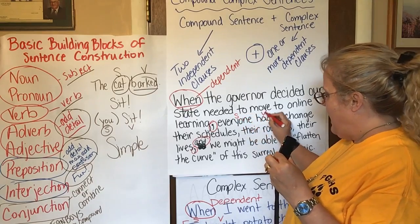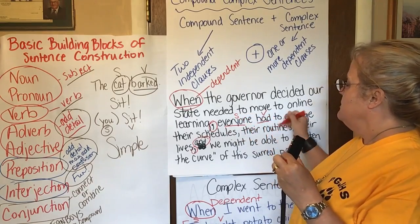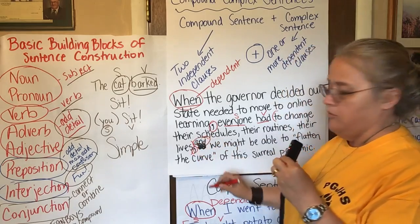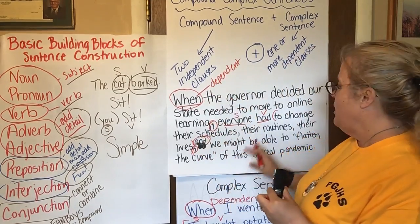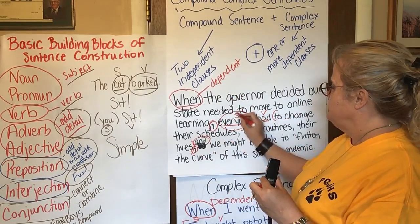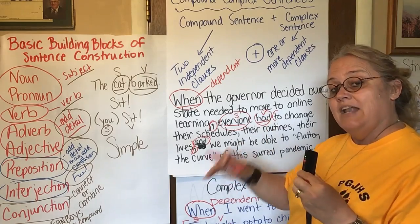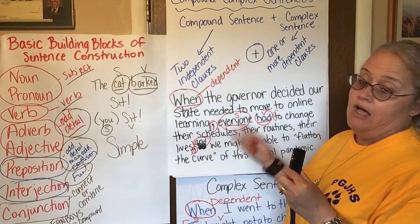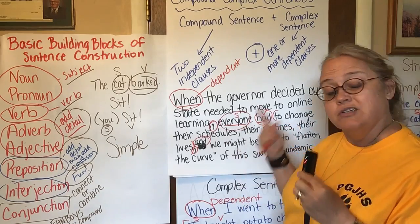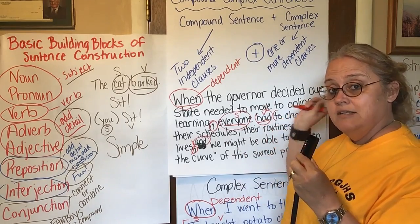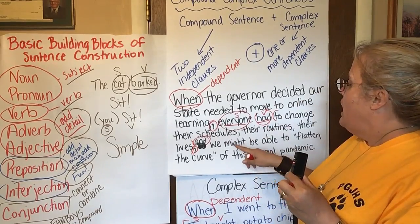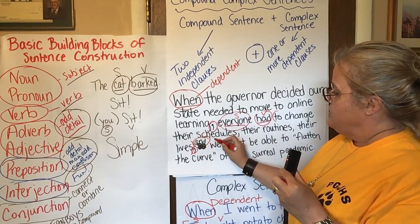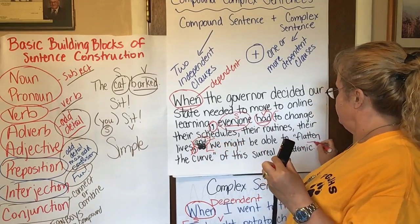'Everyone had' — everyone had something — 'to change their schedules, their routines, their lives.' I'm going to put that in parentheses and separate it out — that has nothing to do with my subject and verb, but I can actually take it out and the sentence still makes sense: 'Everyone had to change.' I don't have to put a comma or 'and' there because we know about a set of items.